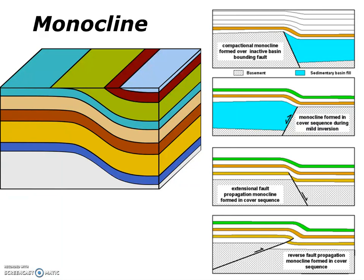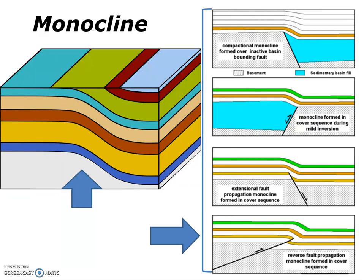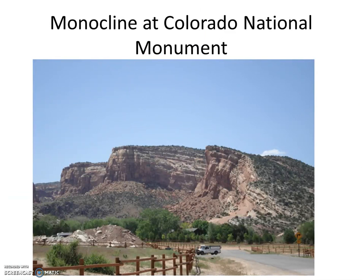Another type of fold that can form in areas of compression is known as a monocline. Monoclines form as large step-like folds in otherwise horizontal sedimentary strata, and they only have one limb. Monoclines are often the product of a reverse fault that has occurred somewhere deep in the crust. Sometimes the sedimentary rocks above the fault can deform as a ductile solid, folding over the fault to produce a monoclinal fold. This is a picture of a well-known monoclinal fold present in western Colorado at the Colorado National Monument. Notice the dipping limb.